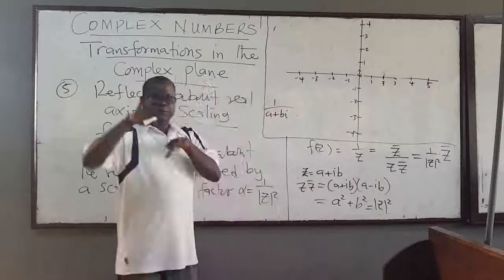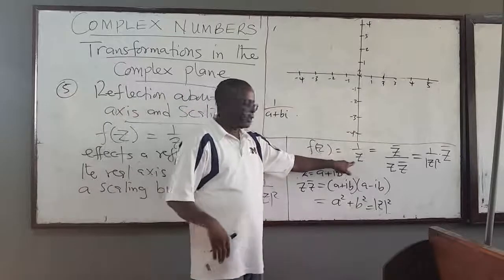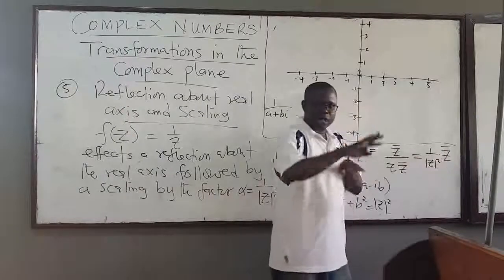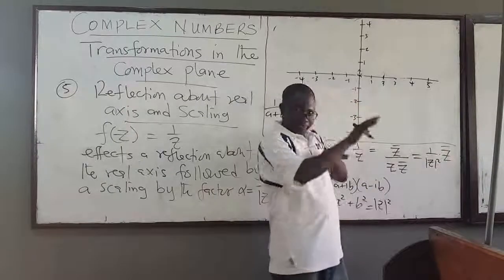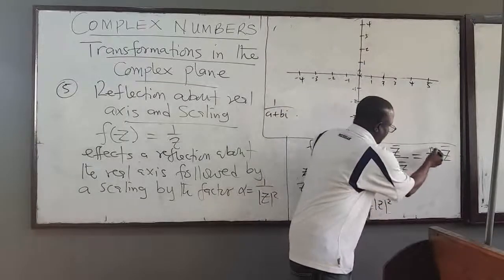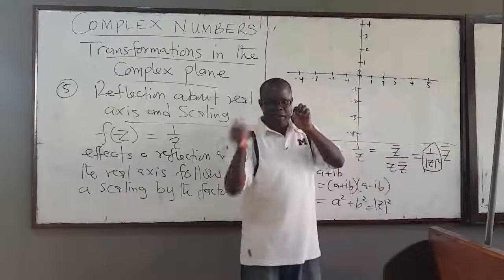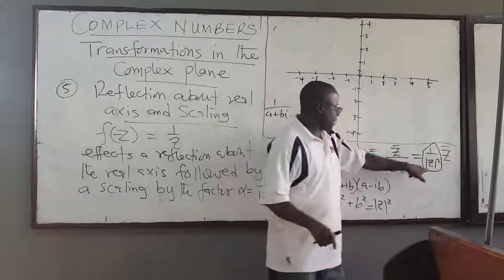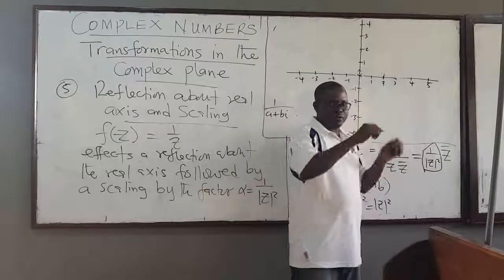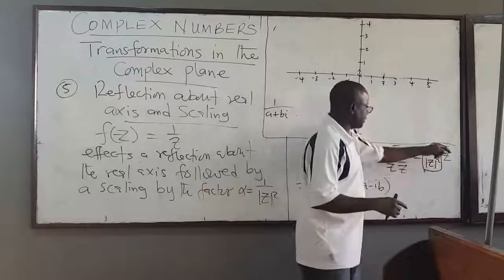So if I take the inverse of a complex number, I get the conjugate of it — which is a reflection about the real axis, as we just showed — but then I also have to multiply by the factor 1/|z|², so I scale it. I reflect it, but I also have to scale it by that factor.